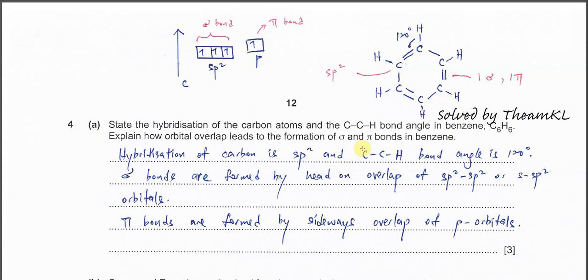Question 4a: State the hybridization of carbon atoms and C-C-H bond angle in benzene. First you must know how benzene looks like. Benzene C6H6 means each carbon is going to bond to one hydrogen and two other carbons, which look like this. Now the question asks about hybridization, so we know that whenever carbon has a double bond, it's most likely going to be sp2.